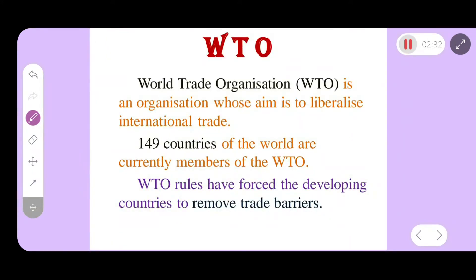The World Trade Organization (WTO) has 149 member countries and is one of the organs of the United Nations. It interlinks all trade among countries, sets rules and regulations, and works to remove trade barriers. Countries follow WTO-prescribed restrictions and rules governing international trade.